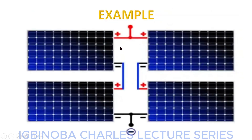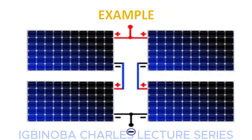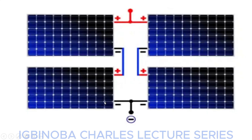Here we have four different solar panels: panel one, panel two, panel three, and panel four. These two panels are connected in series — the negative of panel one is left, while the positive of panel one is connected to the negative of panel two, then the positive of panel two is left. So panel one and two are connected in series. Similarly, for the second pair, the positive of one is connected to the negative of the other, giving us another set connected in series.